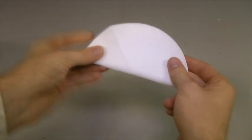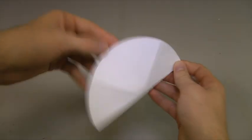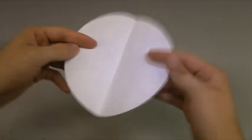You then need to add two further folds in the same direction so that the four folds divide the filter paper into eight segments.